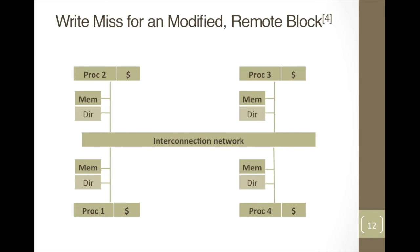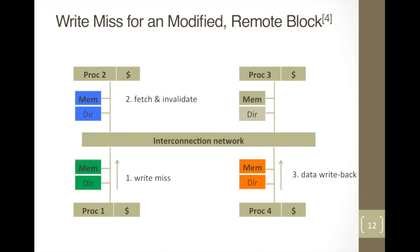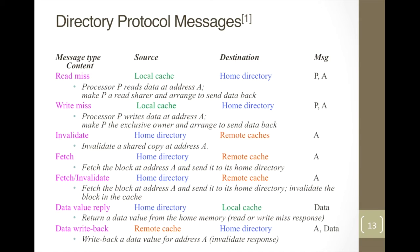Now let's consider a write miss for a modified state with a remote block. If P1 initiates a write operation and it is a miss, P1 sends a write miss message to home node P2. P2 does not have the latest copy, so it sends a fetch and invalidate message to remote node P4. P4 responds with a write-back message to P2 and invalidates its copy. P2 then sends a data value reply to local node P1.